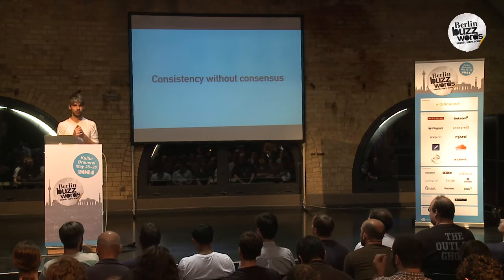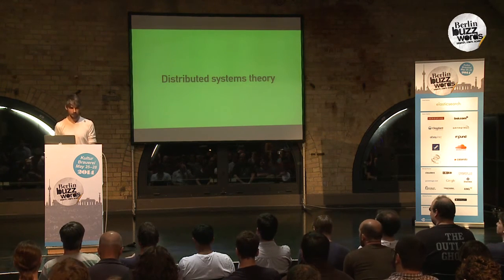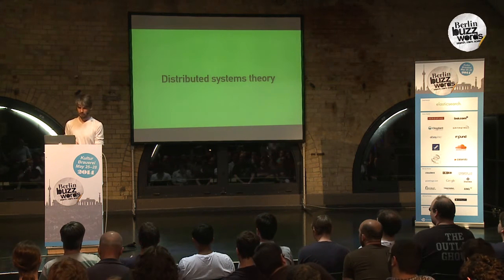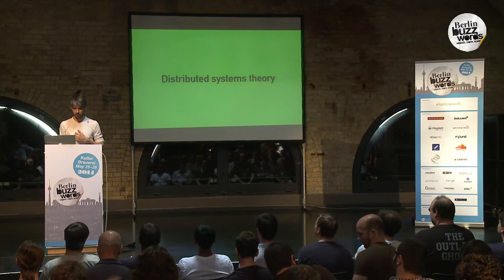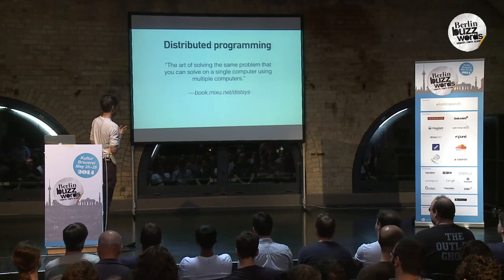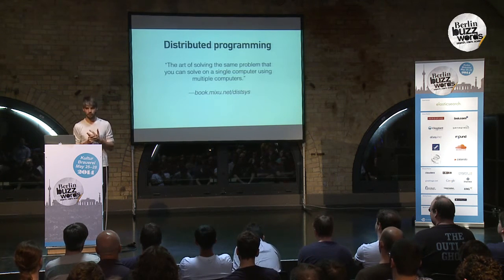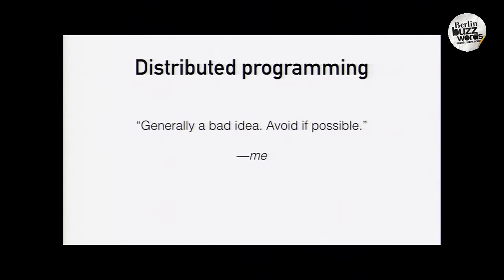I'd like to start by talking a bit about distributed systems theory. If you're a distributed programmer or interested in distributed programming, here's a quote: distributed programming is the art of solving the same problem that you can solve on a single computer using multiple computers. And another quote: distributed programming is generally a bad idea and you should try to avoid it if possible. I think this is pretty intuitive.